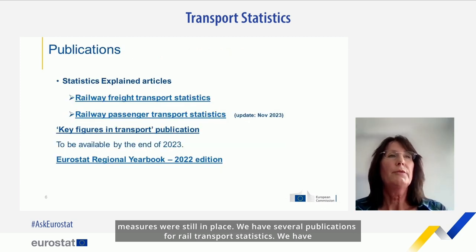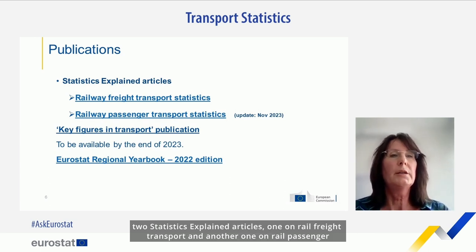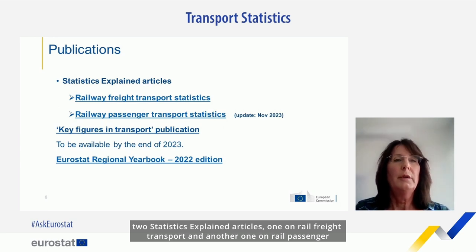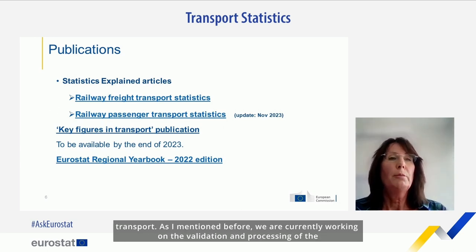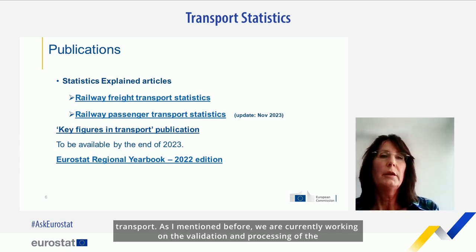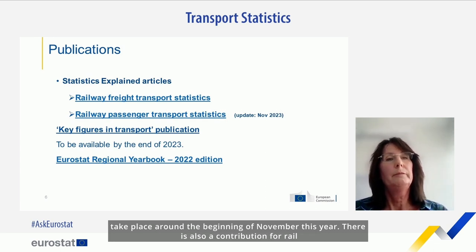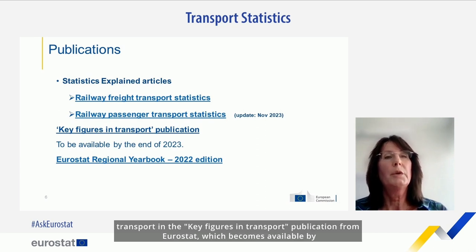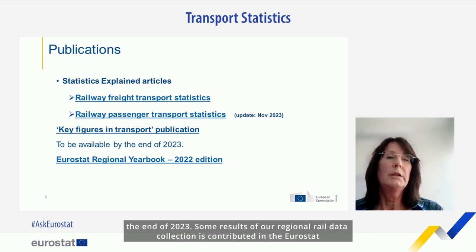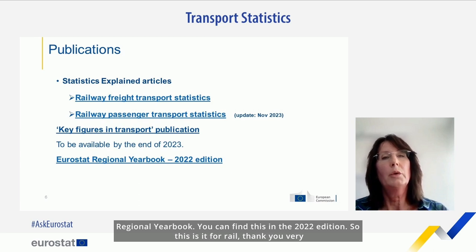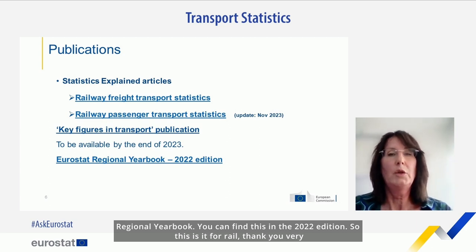We have several publications for rail transport statistics — two statistics explained articles, one on rail freight transport and another on rail passenger transport. We are currently working on validation and processing of the annual 2022 data, which will probably be updated around the beginning of November this year. There is also a contribution for rail transport in the key figures in transport publication from Eurostat, available by end of 2023. Some results of our regional rail data collection are contributed in the Eurostat regional yearbook, in the 2022 edition. Thank you very much for your attention.